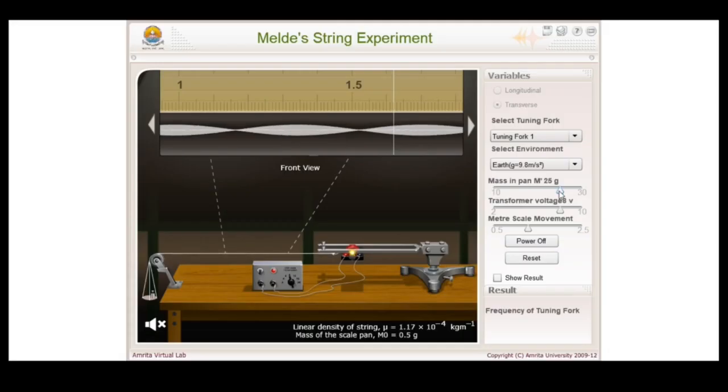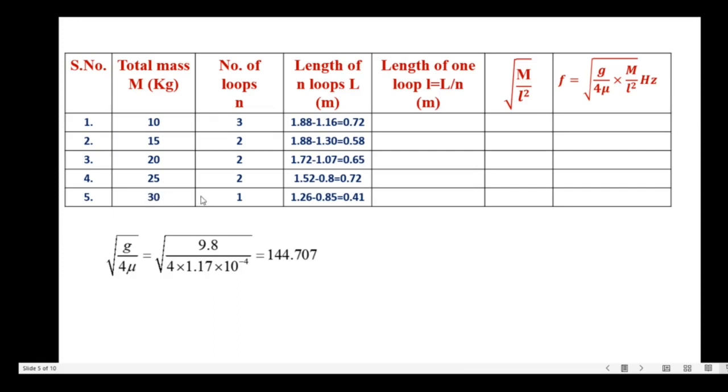The last one, let me select the mass as 30 grams. This time we have only one well defined loop along the length of the string. Let us note down the reading by slightly adjusting the scale position. The left node reading is 0.85 and the right side reading is 1.26. Enter the readings in the table: 1.26 minus 0.85 equals 0.41.